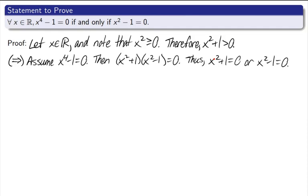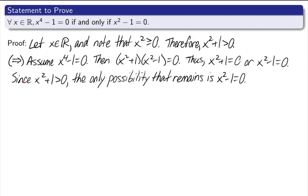If x was not a real number, this might be a little bit different. Whatever the case, let's use this fact. Since x squared plus 1 is greater than 0, the only possibility that remains is x squared minus 1 equals 0. That's what we were trying to show. Now let's do the other direction.